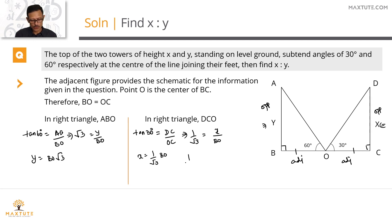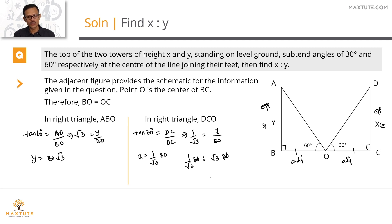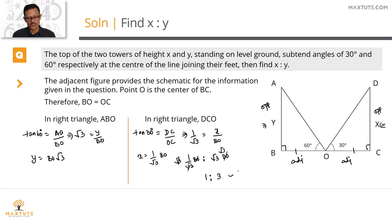We know x = (1/√3)BO and y = √3·BO. So the ratio x : y = (1/√3)BO : √3·BO. BO cancels, leaving 1/√3 : √3. Multiplying through by √3 gives 1 : 3. So x : y = 1 : 3. Both forms — 1/√3 : √3 or 1 : 3 — are acceptable for full marks.